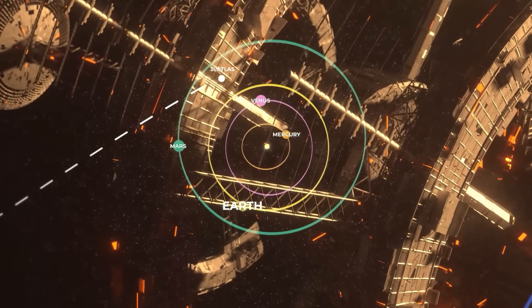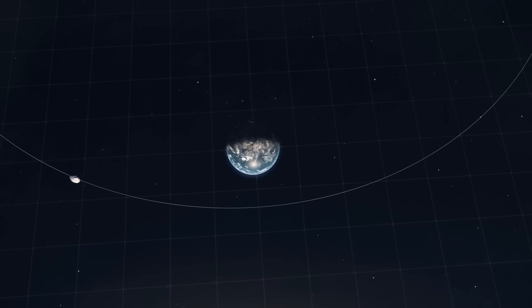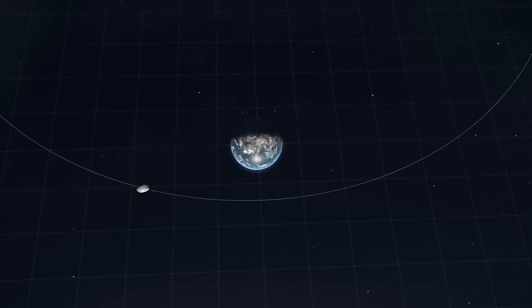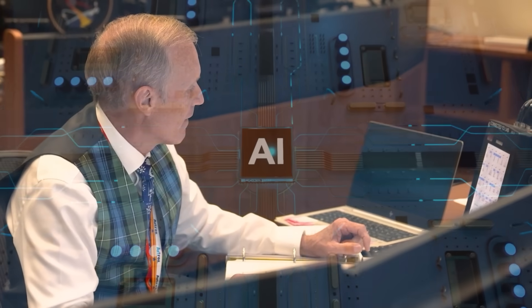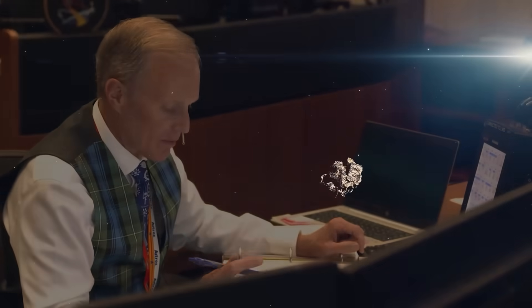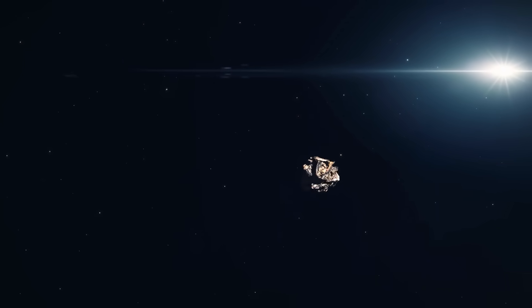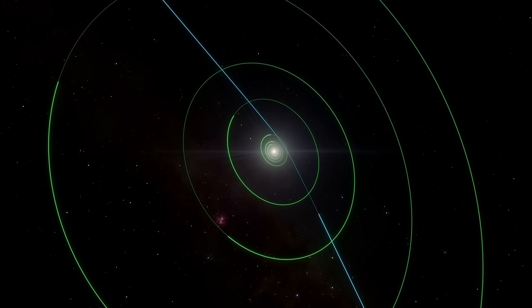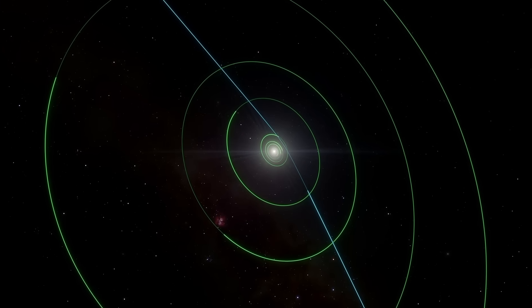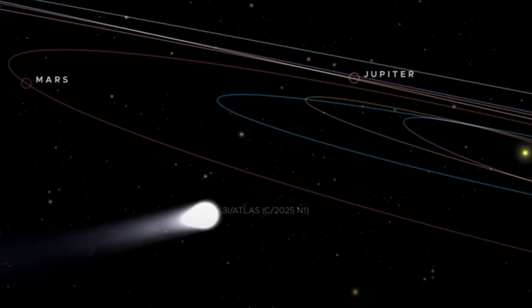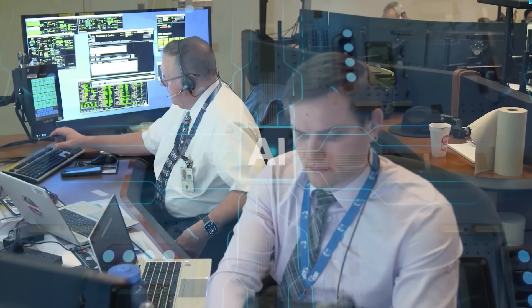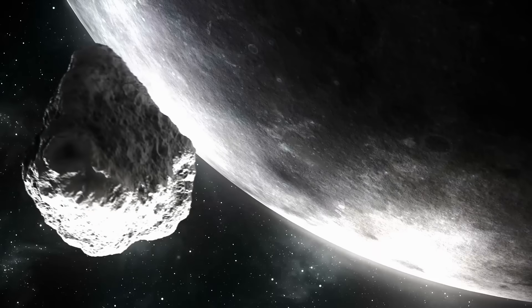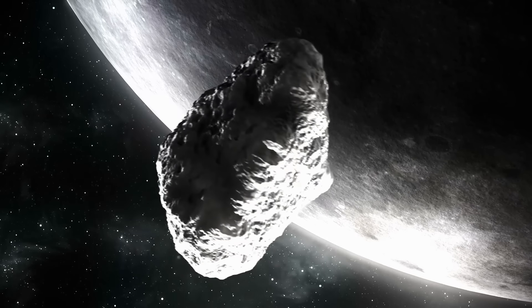Then came the trajectory. The subtle, non-gravitational accelerations had puzzled everyone. The AI simulated not just the object itself, but the space-time around it. It found that the small nudges in its path weren't random. They were precise, timed course corrections. What was truly mind-blowing was that the AI predicted these corrections before they happened. It had identified a pattern, a flight plan.